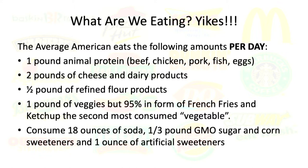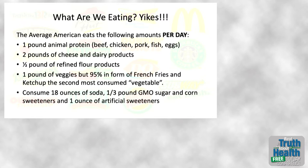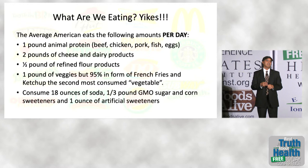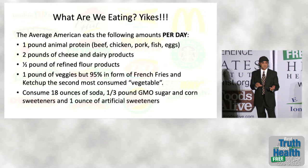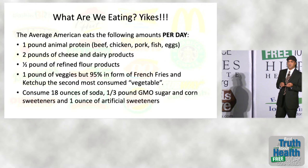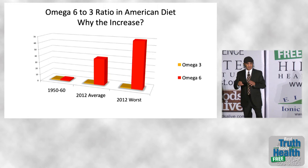Let's look at what Americans are eating in the standard American diet right now. Per day, the average American eats one pound of animal protein — beef, chicken, eggs, pork, or fish — two pounds of cheese and dairy products, half a pound of refined flour, and a pound of vegetables mostly in the form of french fries. Ketchup is now the second most consumed vegetable. People also consume about 18 ounces of soda, a third of a pound of GMO sugar and high-fructose corn syrup sweeteners, and an ounce of artificial sweeteners like the pink, blue, and yellow packets.